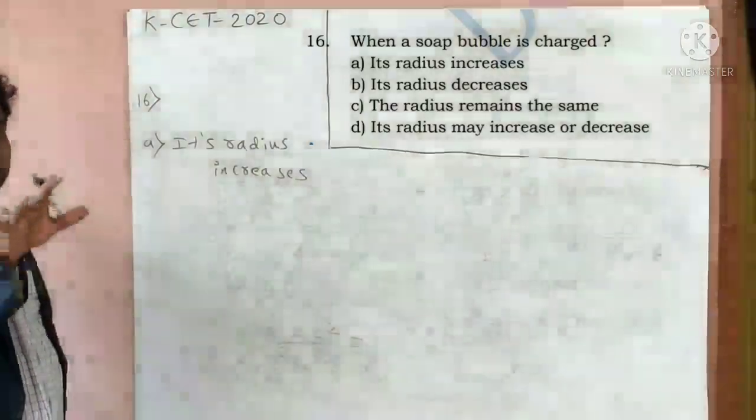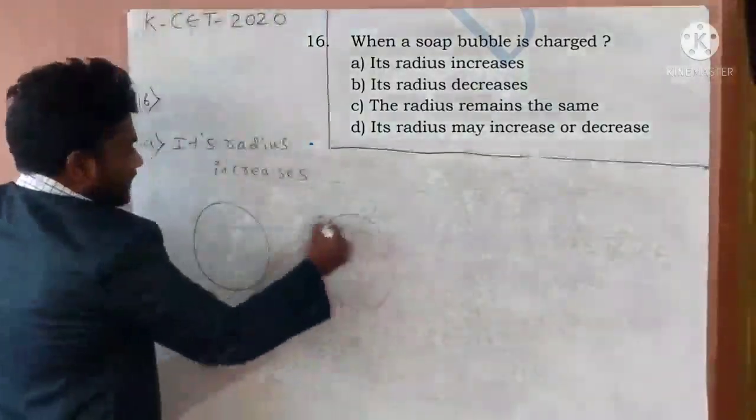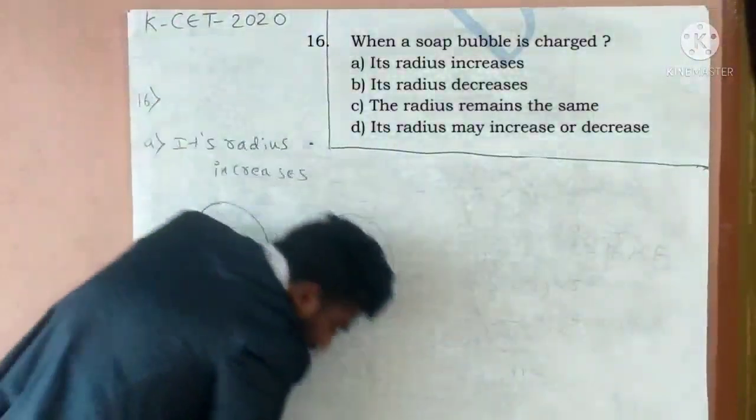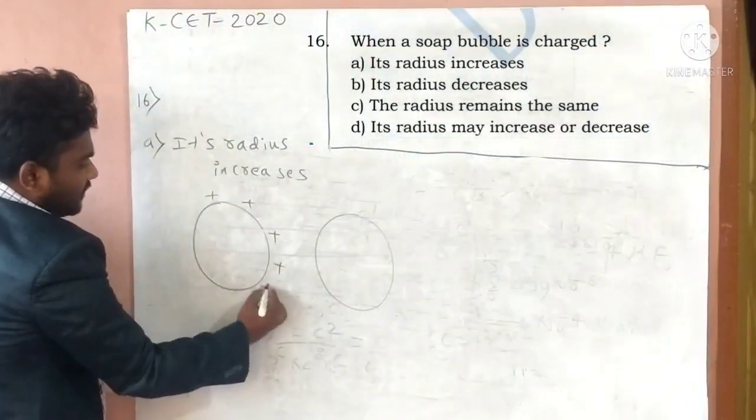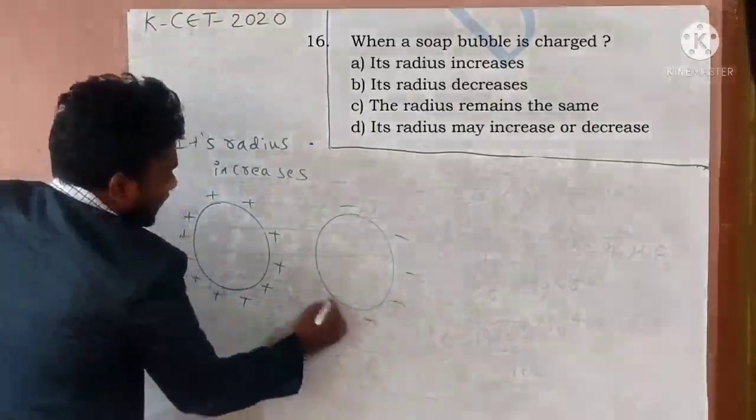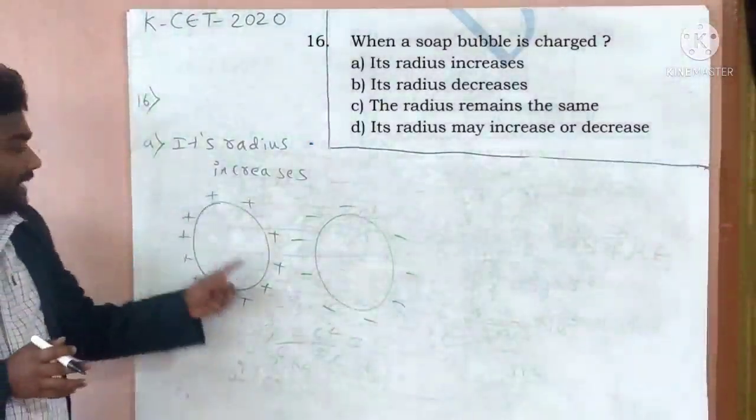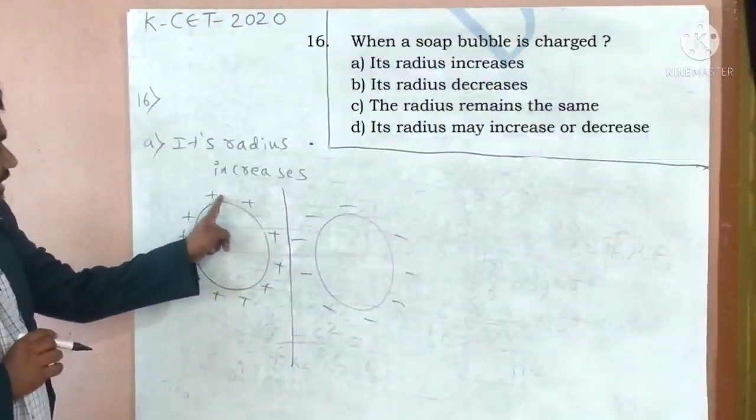So, let me explain. Soap bubble. Soap bubble. Soap bubble, what are the charges? Similar charges. Positive, positive, positive, negative, negative, negative. Soap bubbles, similar charges. We know that similar charges.